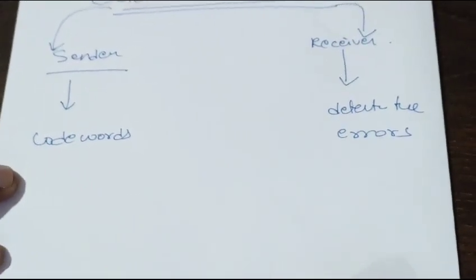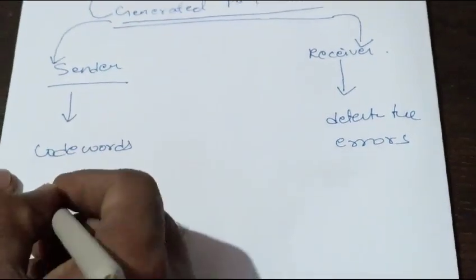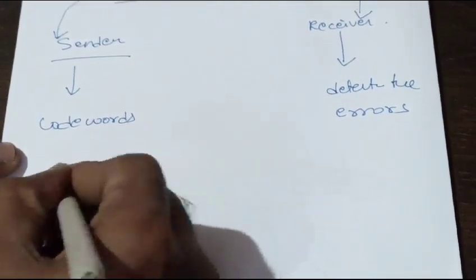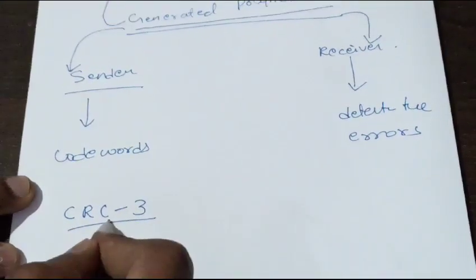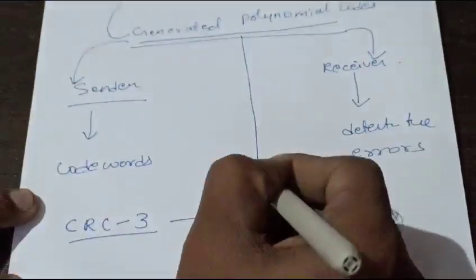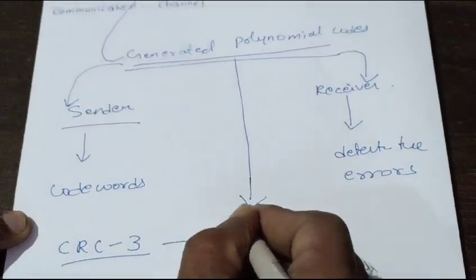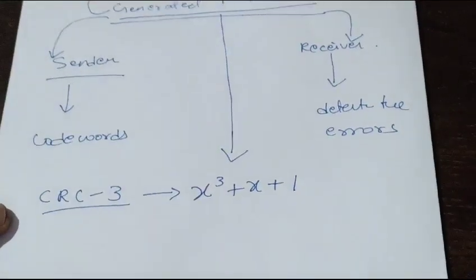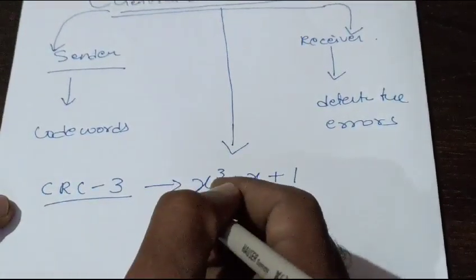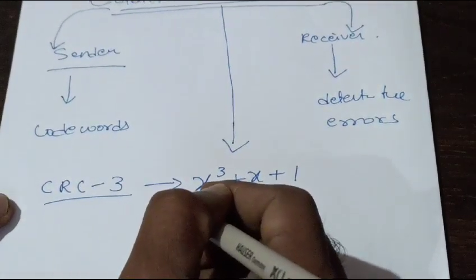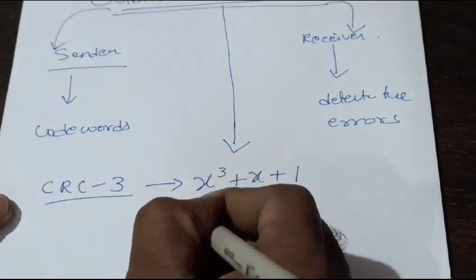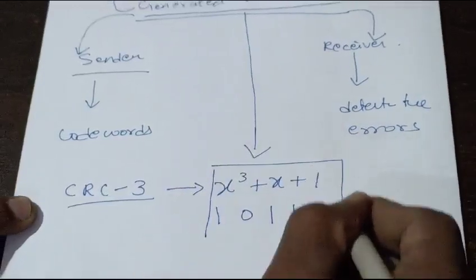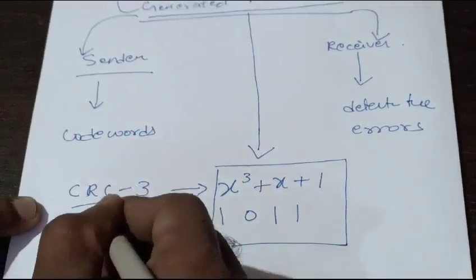If I take CRC-3, that is Cyclic Redundancy Check 3, then the generated polynomial will be x³+x+1. It is standard, mathematically proven. In terms of binary, it will be 1011. This is the standard generated polynomial for CRC-3.